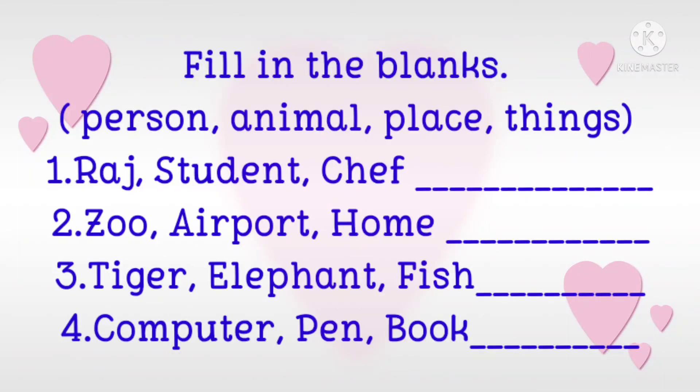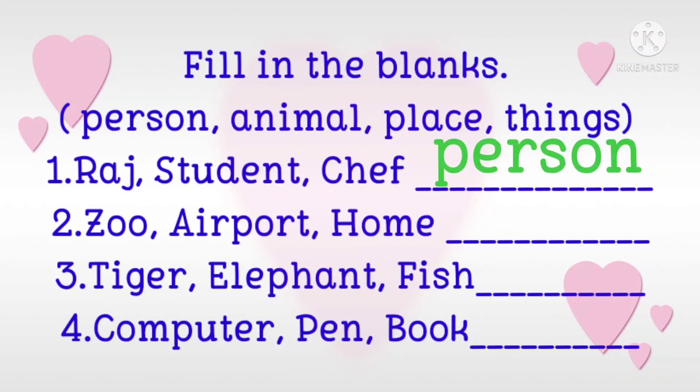Now we see some exercise. Fill in the blanks. Here we have person, animal, place and things. We are going to identify the group of nouns. The first one is Raj, student and chef. These are names of a person. So take and write: person.